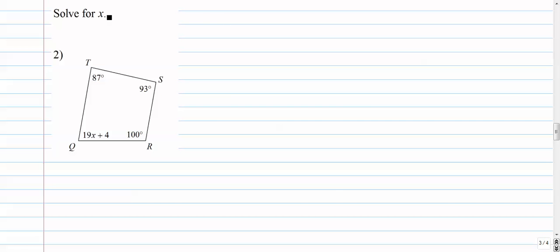Here we go. We're looking for, in this case, the value of X, which is right there. So you write your equation. 87, it doesn't matter what angle you start with, plus 93 plus 100 plus 19x plus 4 equals 360.